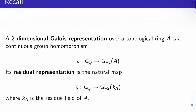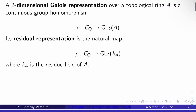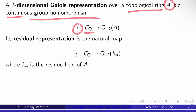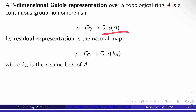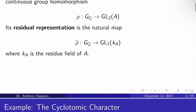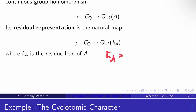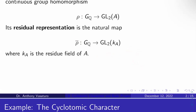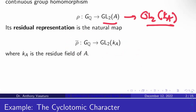Recall from last video: a two-dimensional Galois representation over a topological ring A is a continuous group homomorphism rho from the absolute Galois group of Q to GL2 of A. Its residual representation is the natural map, which we call rho-bar, from G_Q to GL2 of K_A, where K_A is the residue field of A — that is, K_A = A mod its unique maximal ideal M_A. This map is rho composed with the natural entry-wise reduction map from GL2 of A to GL2 of K_A.